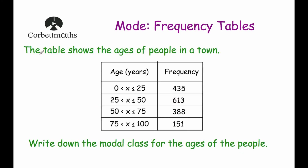Let's have a look at one more question. The table shows the ages of people in a town. We've got age groups: 0–25, 25–50, 50–75, and 75–100, with frequencies 435, 613, 388, and 151. We've been asked to write down the modal class interval. Looking at the frequencies, 613 is the highest, so that class interval — ages greater than 25 but less than or equal to 50 — is the modal class interval. Make sure you write it down exactly as it's written in the table. So the modal class interval is the interval with the highest frequency. And that's it.